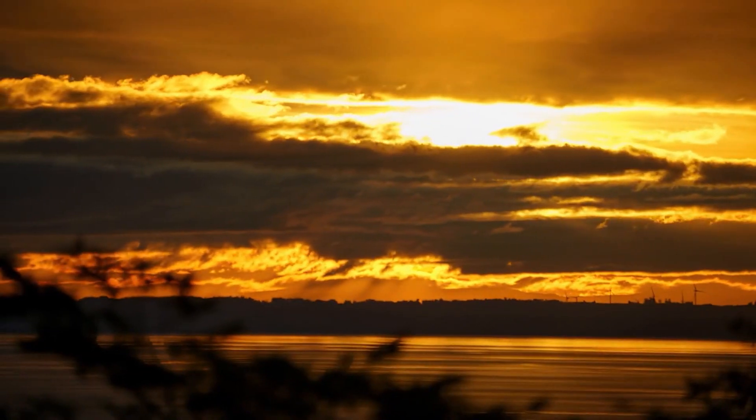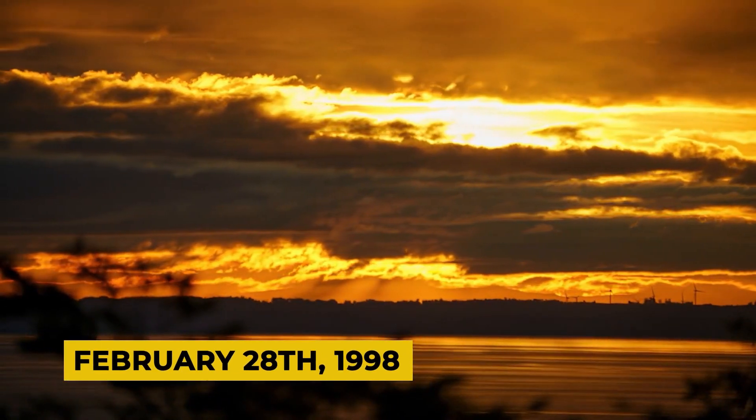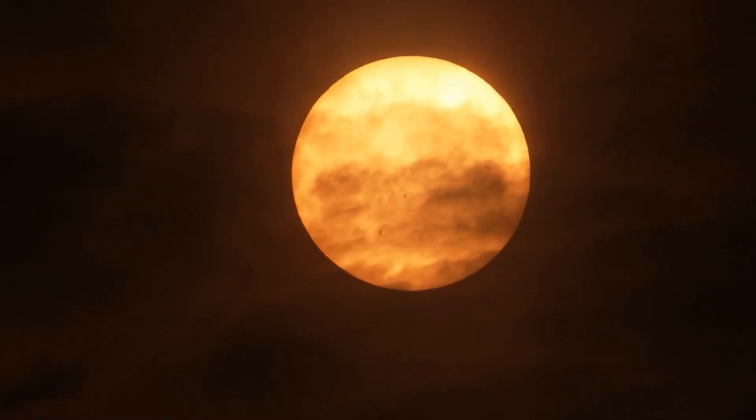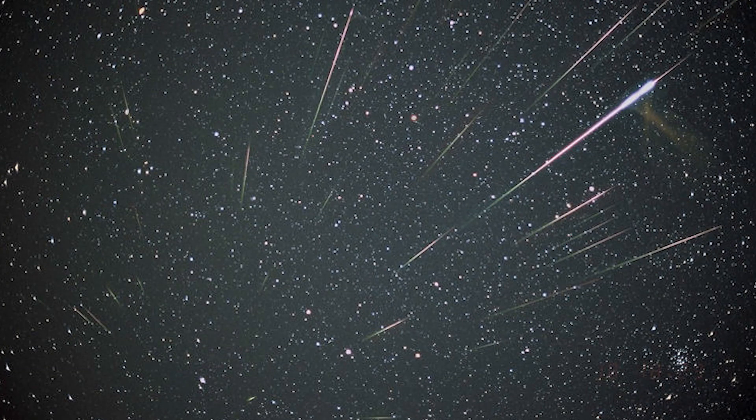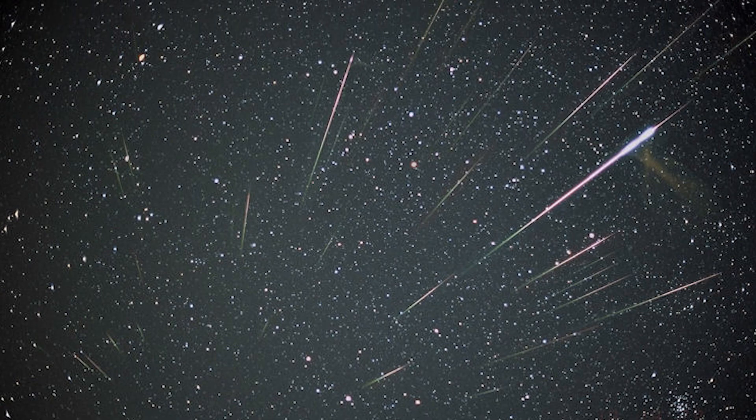The comet's closest approach to the sun occurred on February 28, 1998, with its next predicted precipitation event set for November 20, 2031, indicating the timing of the next major Leonid storm.